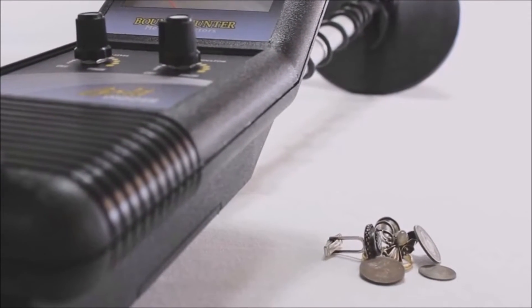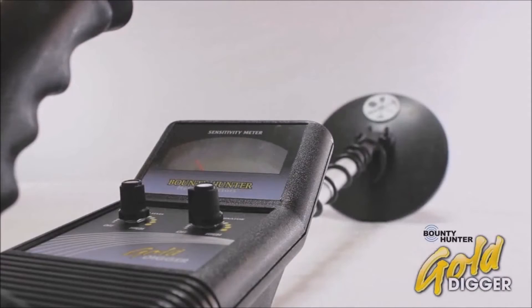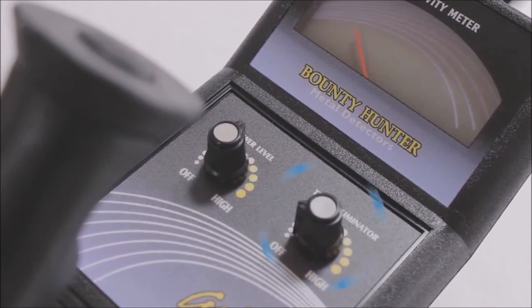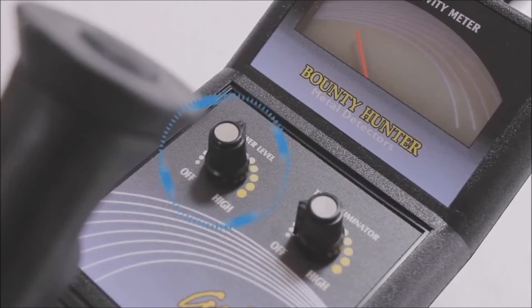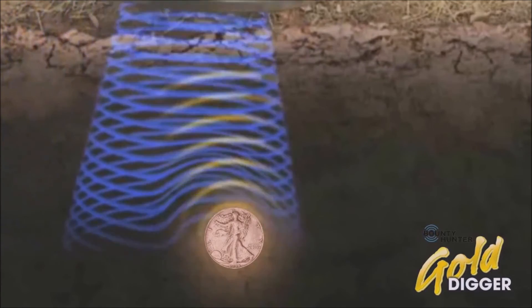The Gold Digger is perfect for the beach, parks, and fields. The trash eliminator control eliminates detection of most unwanted targets, while the power level control maximizes depth of detection. Small objects like coins can be detected up to six inches deep.